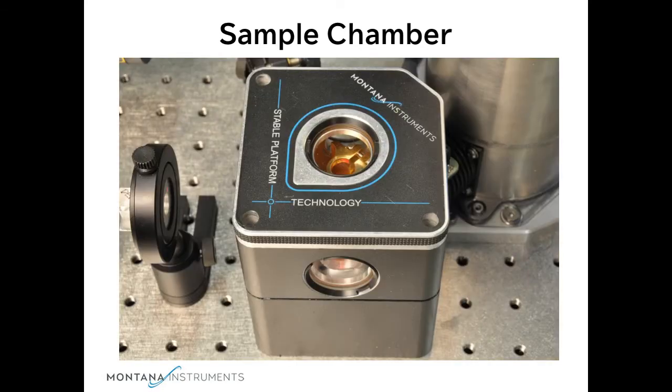In the front of the cooling unit is the sample chamber. By mounting this firmly to the table, it acts like other optical elements of your system and allows the system to achieve vibrations of less than 5 nanometers.